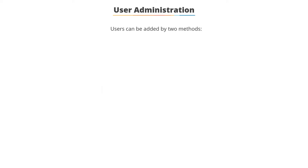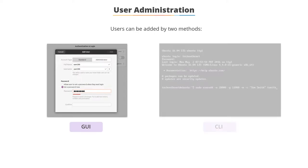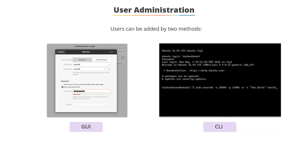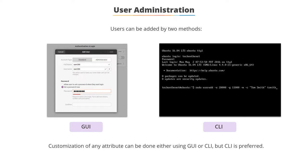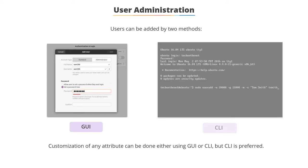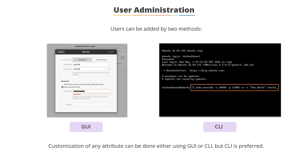Users can be added to the system by two methods: one is the GUI, or the graphical method, and second is the CLI, or command line interface method. The minimum information required to perform this task are the name and password. If you want to customize any attribute, you can use either the GUI or CLI method, but the CLI method is preferable. The screenshot on the left depicts how to add a user using the GUI method, and the screenshot on the right shows how to add a user using the CLI.